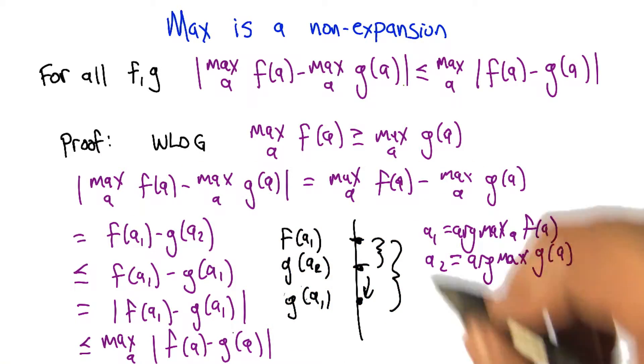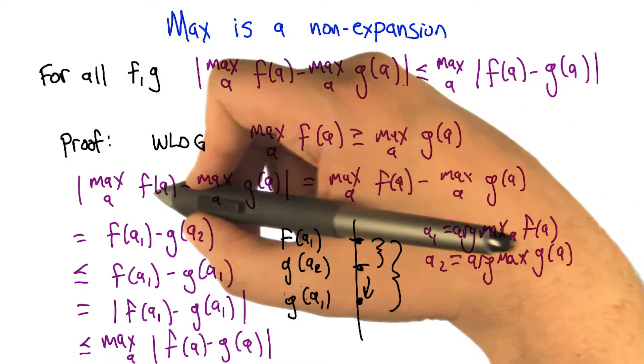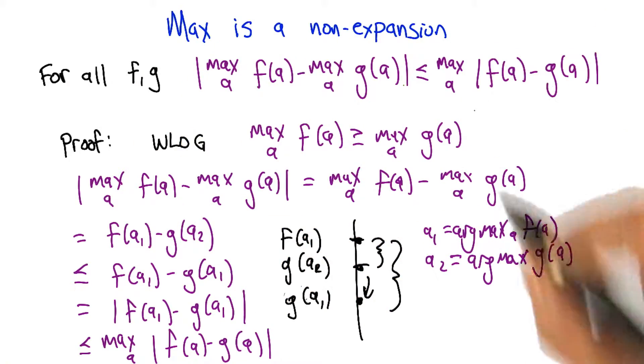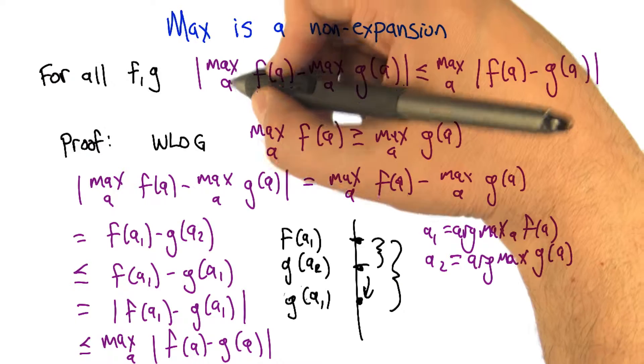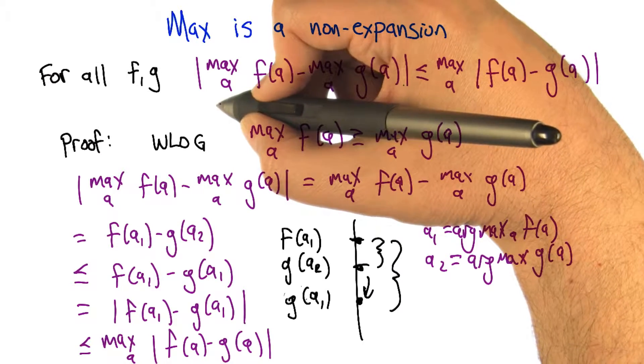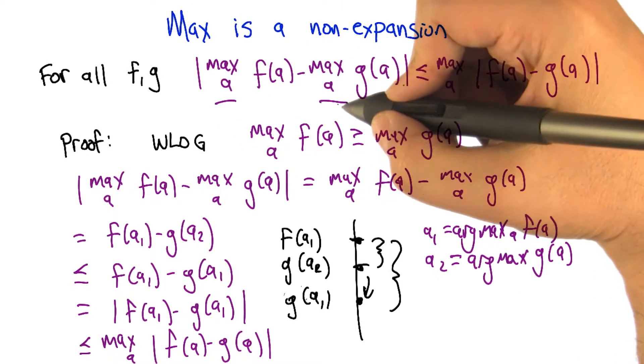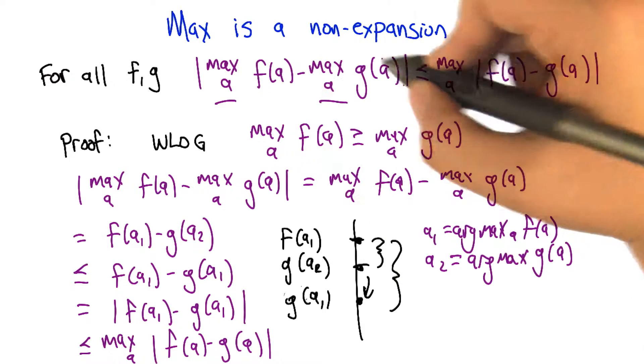Right. And with that in place, that actually completes the chain of inequalities from here to here. So we get this non-expansion property for the max operator. The max operator's being used here as sort of a way of summarizing these functions f and g.